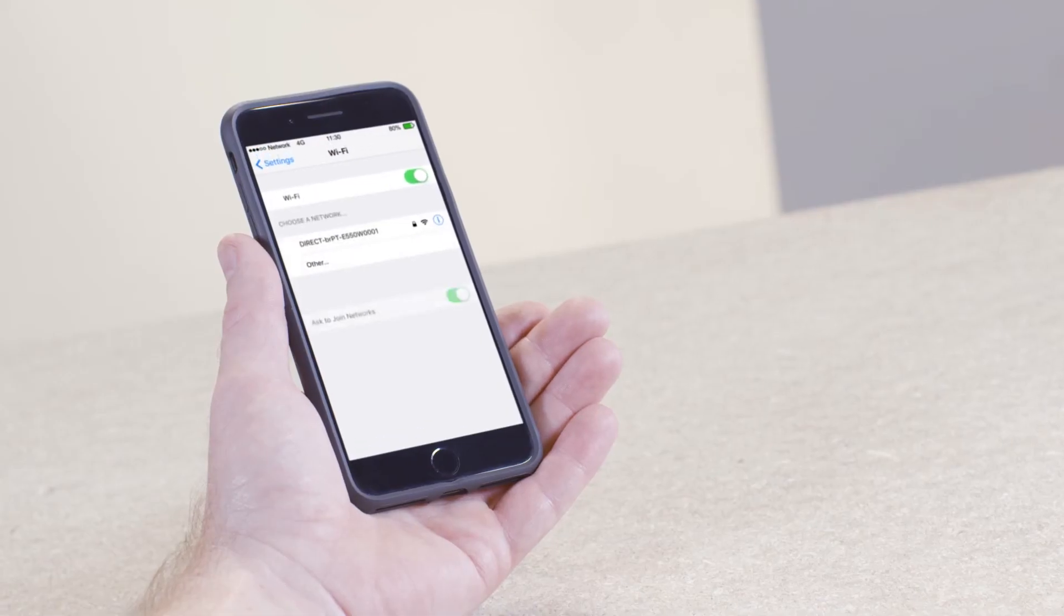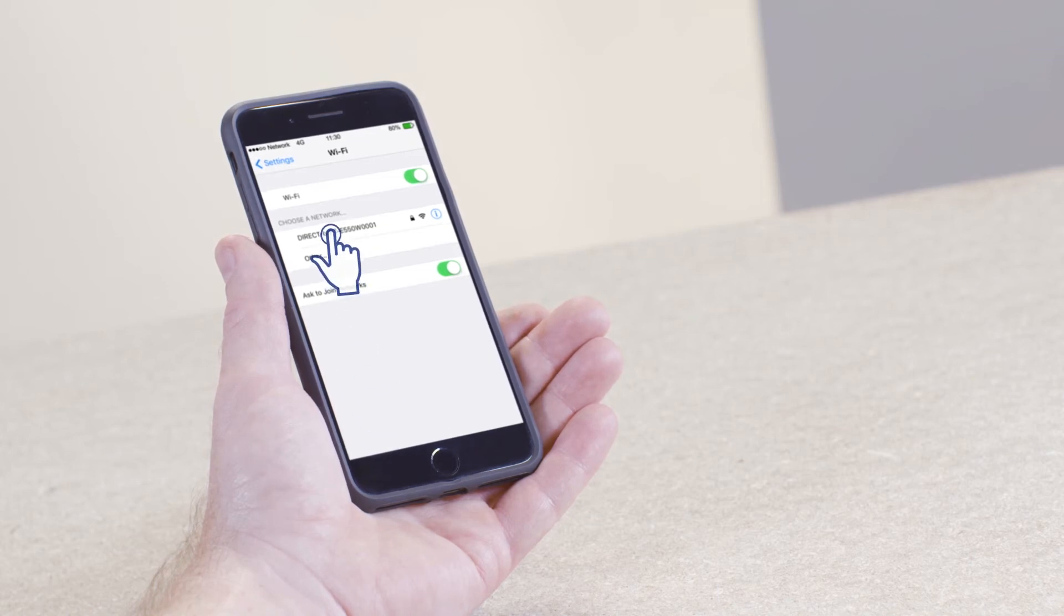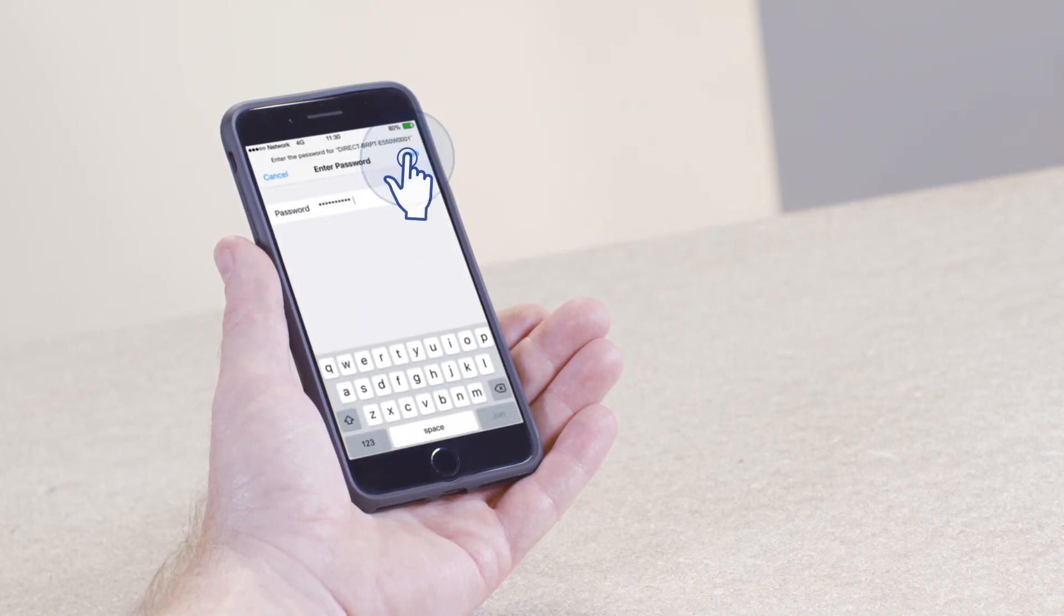Next, open your Wi-Fi selection on your mobile device and select the printer name. Enter the password and connect.